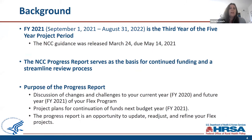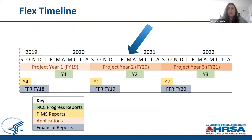Now diving into the NCC. This is FY 2021, which runs from September 1st, 2021 to August 31st, 2022 — the third year of your five-year project period. The NCC guidance was released in EHB yesterday and will be due back in EHB on Friday, May 14th. The NCC progress report serves as the basis for your continued funding and incorporates a streamlined review process. We are currently in March in the middle of project year two for FY 2020, and your NCC progress report is something you should be working on now.